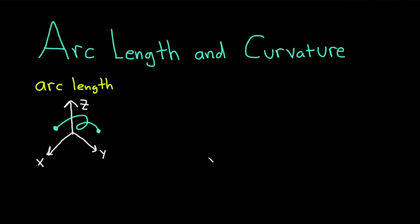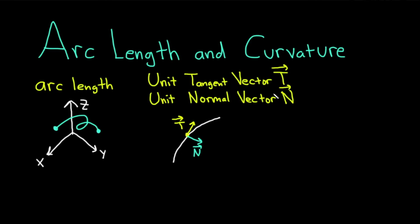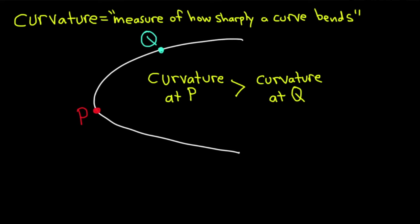Hi everyone. It's the Mathsorcer here with Chegg. In this video, we're going to talk about arc length and curvature. The first thing we're going to discuss is arc length — you can see a picture where the arc length is the length of this blue curve. Then we'll discuss the unit tangent vector T and the unit normal vector N, pictured in the graph. Lastly, we'll discuss curvature, which is a measure of how sharply a curve bends. As you can see, the curve bends more at P than at Q, so the curvature at P is greater than at Q. Let's go ahead and do an example.